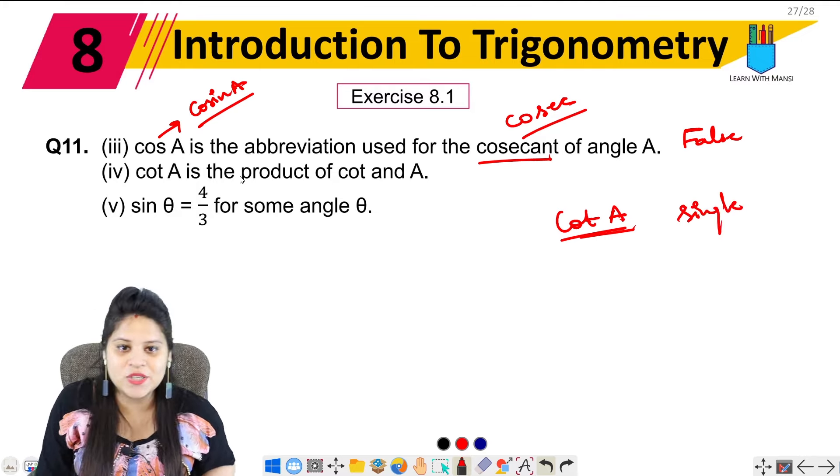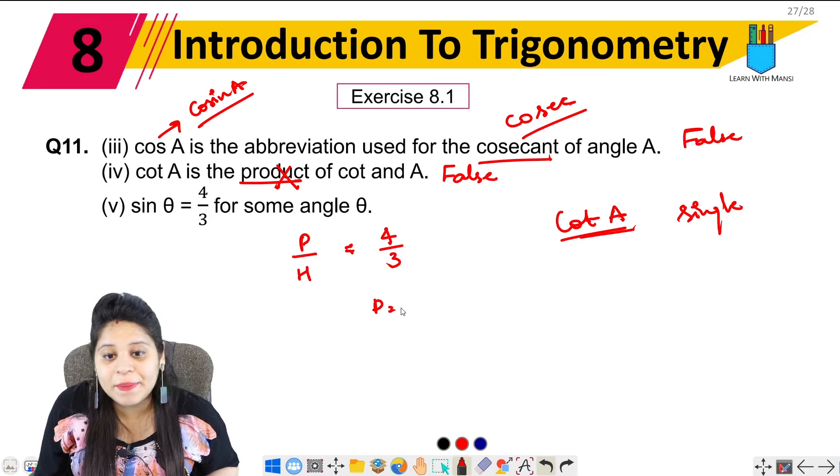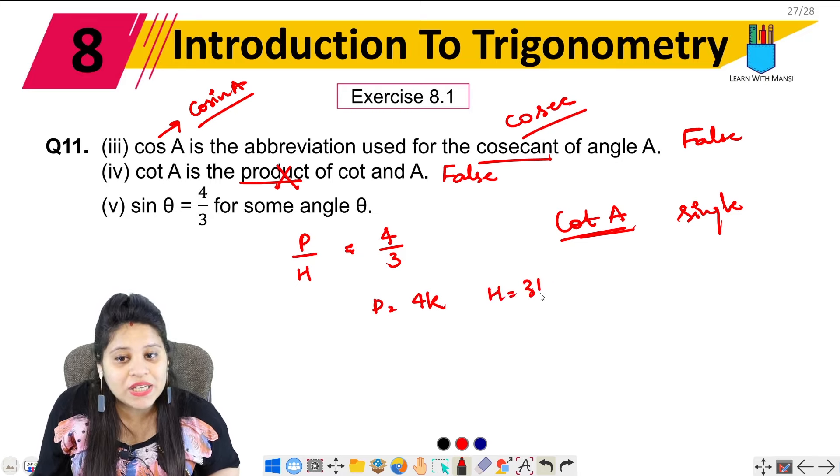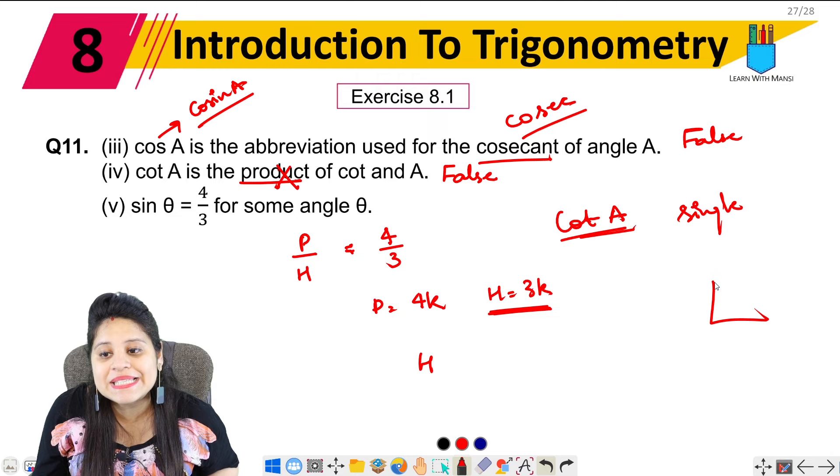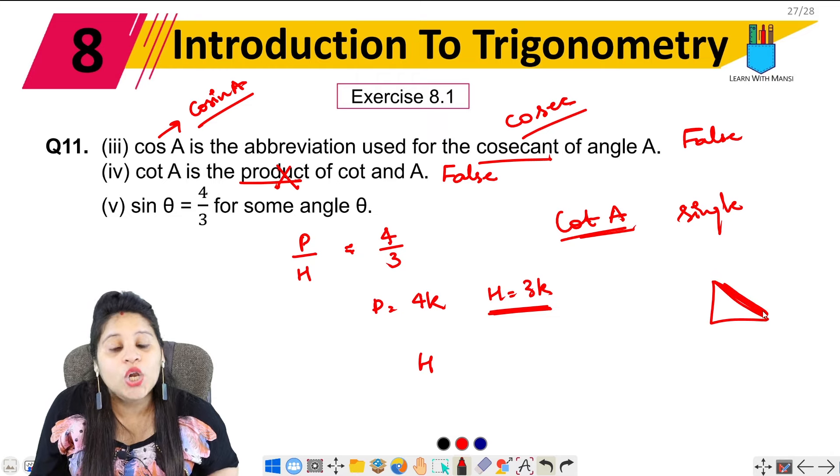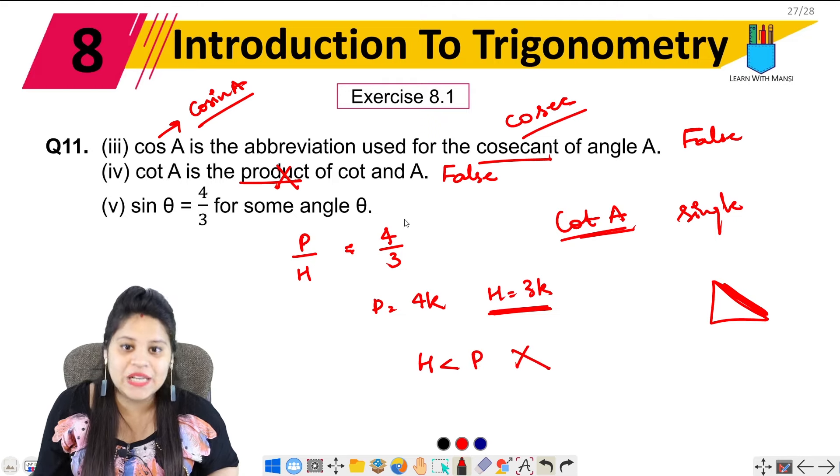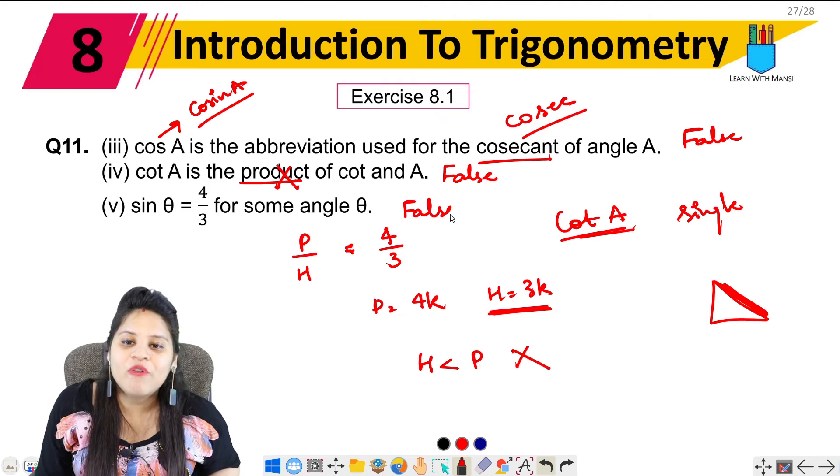Last part is sin theta equals to 4 upon 3 for some angle theta. Now let's talk about sin theta. Sin theta equals to 4 upon 3. Now here we are getting perpendicular to 4k and hypotenuse to 3k. So here we see hypotenuse is small. We know hypotenuse is the longest side of the triangle. So hypotenuse is small, it is perpendicular. So this statement is false.